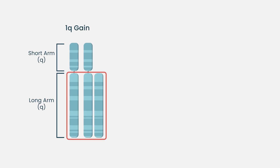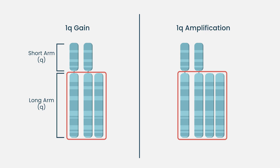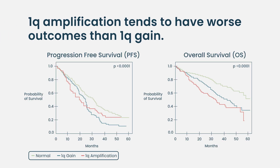Some tumors start with just three copies — one extra copy — but then acquire yet another extra copy later on, copying the same material to four, five, or even six copies. This is exciting because it shows this is a biologically important region, but it makes testing more difficult because a 1Q gain or 1Q copy number change doesn't necessarily mean the same thing. The more copies the cell has already acquired, the more aggressive the tumor may be.